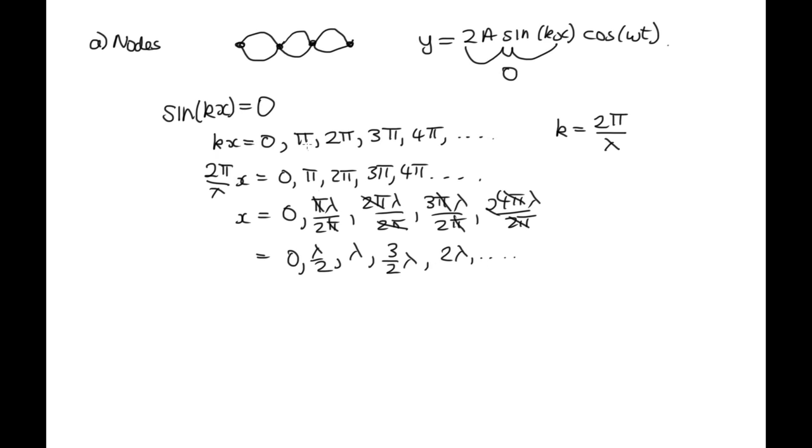So this tells us that these nodes occur every half wavelength. So one loop from here to here is λ over 2. So if we actually want to measure the wavelength for a standing wave, we need to measure two loops. And that will give us the wavelength for one wave.